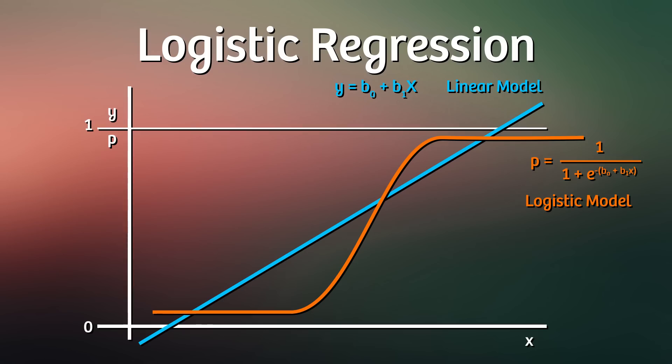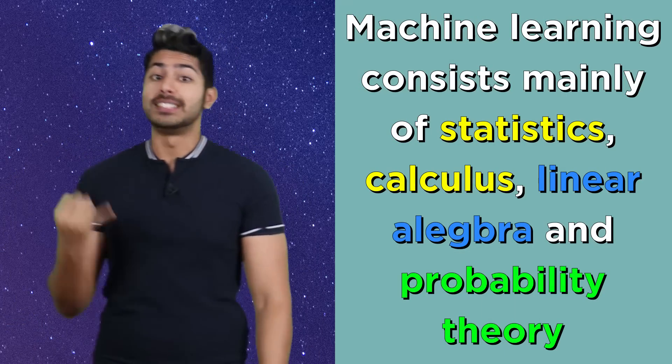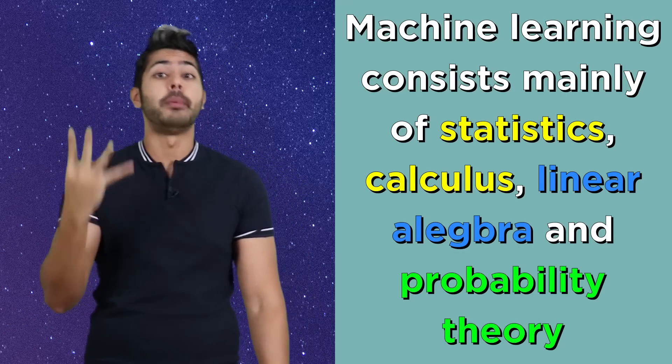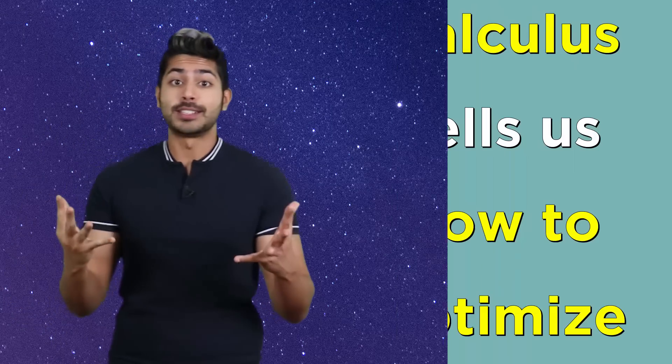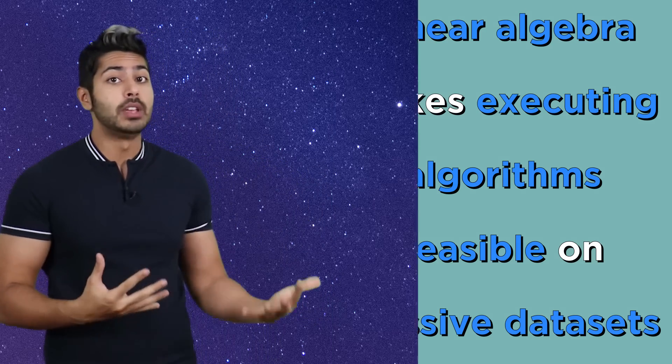We're left with some threshold. Past some point x, we are more likely than not looking at a prime house. We'll use an s-shaped curve given by the sigmoid function to do this. Once we optimize our function, we'll plug in input data and get a probabilistic class value. Just like that. So, to summarize, machine learning consists mainly of statistics, calculus, linear algebra, and probability theory.